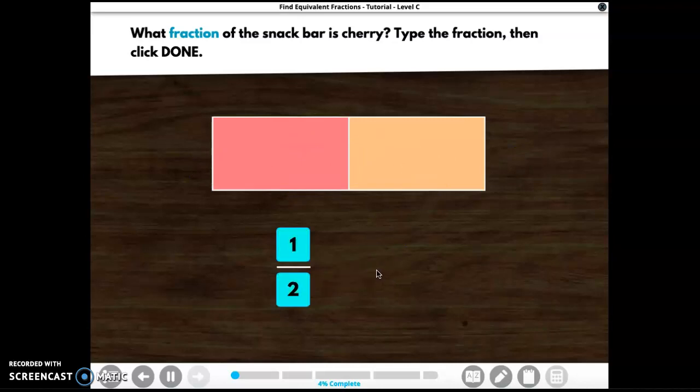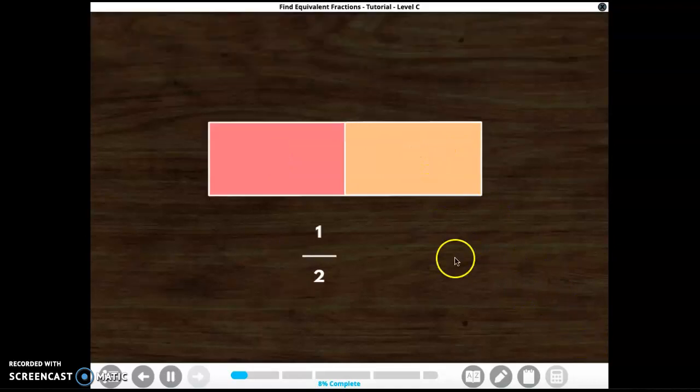Bingo! The snack bar is divided into two equal pieces. So each piece is one half. That means one half of the snack bar is cherry. Yep. And then this one half is coconut. Okay, let's get cooking. One creamy dream snack bar, one half cherry, one half coconut.